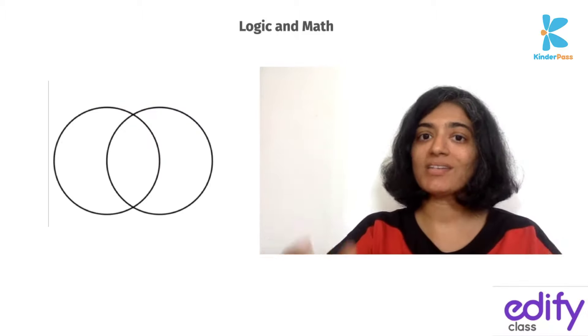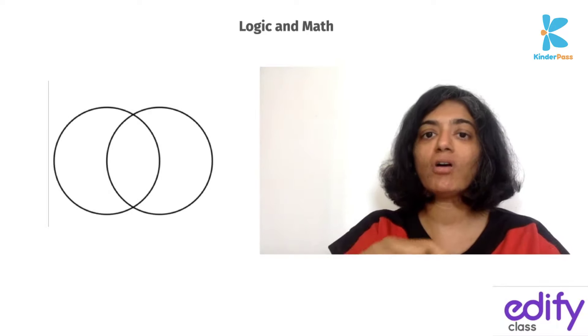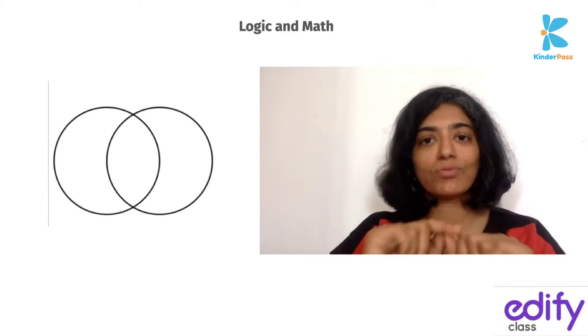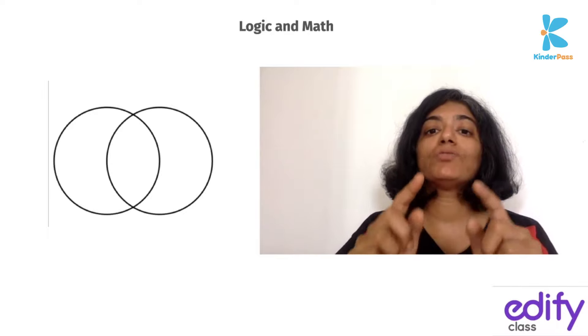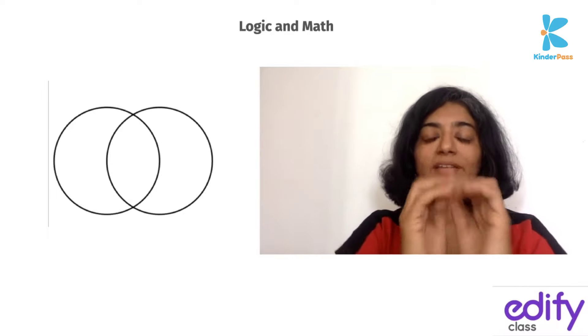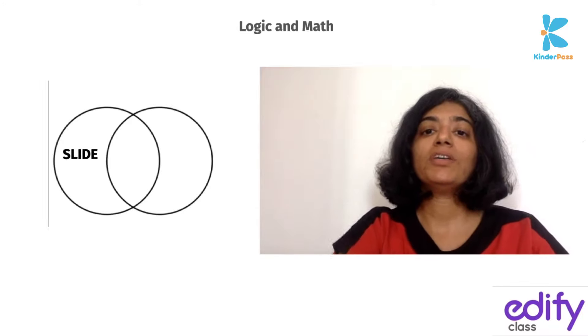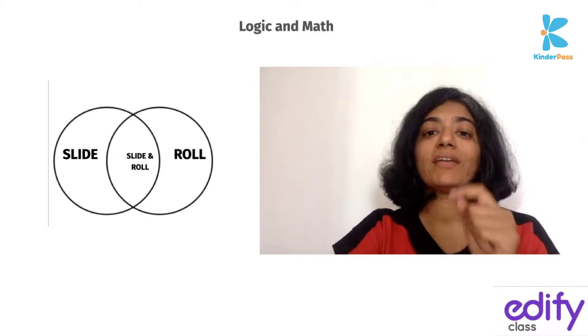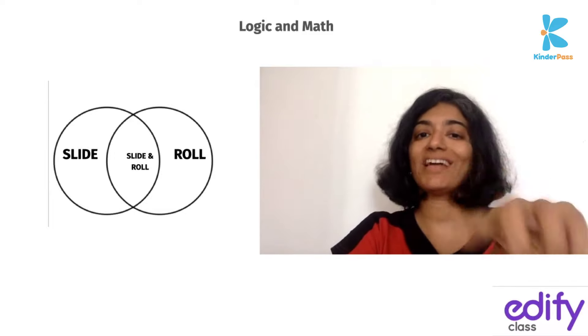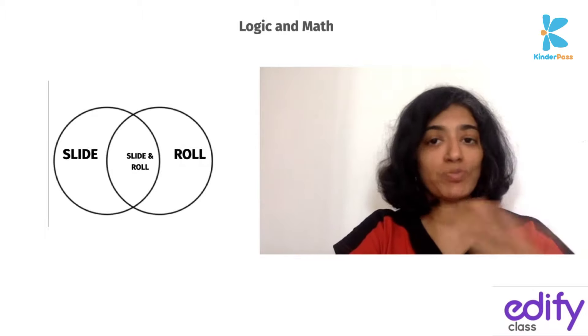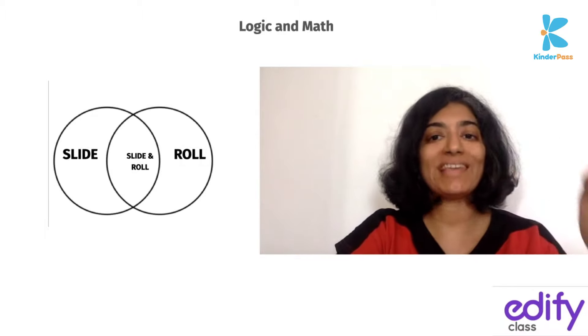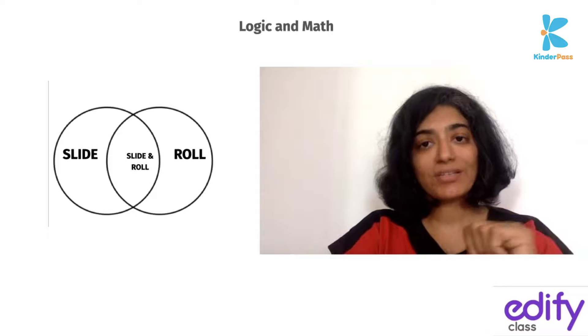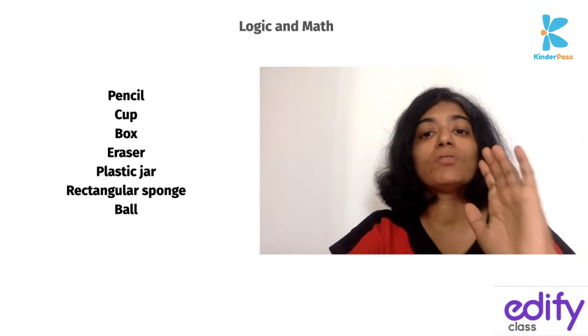To begin with, if you have two large rings like hula hoops you could use that. If you don't, you could just take a big chart and two different colored sketch pens and draw two circles. These are Venn diagrams like what you may have learned later in your school. The two circles need to overlap for a small area. On one circle you could write 'slide,' on another circle you could write 'roll,' and on the area that is overlapped by both the circles you could write 'slide and roll.' The child may not be able to read, which is perfectly okay. You just need to say the word slide and the word roll.